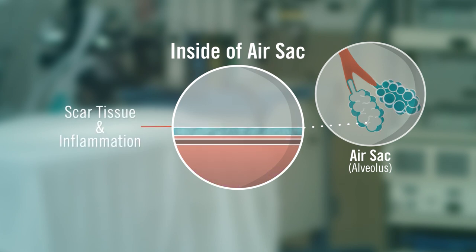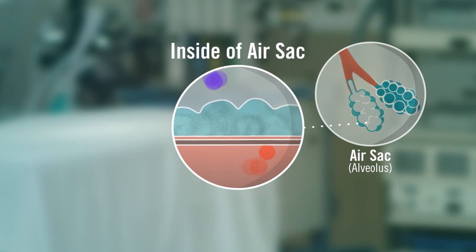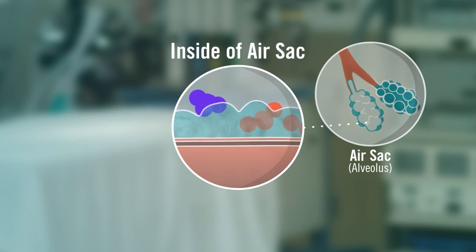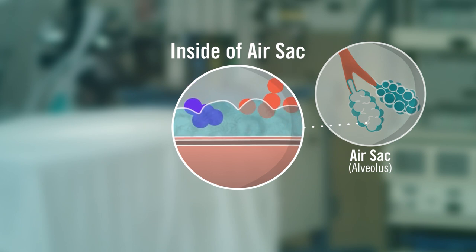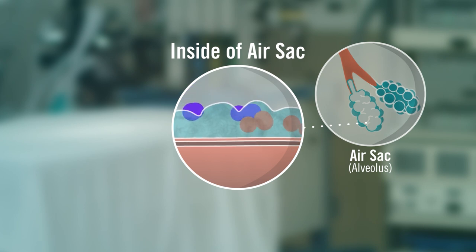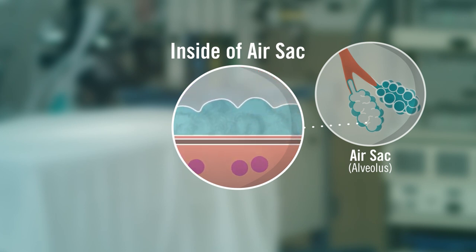When scar tissue or inflammation builds up in the walls of the air sacs, the wall gets thicker, making it more difficult for oxygen to get into the bloodstream. Thickened walls are also stiff, making it harder to breathe, which causes breathlessness. Scar tissue and inflammation can also trigger cough.